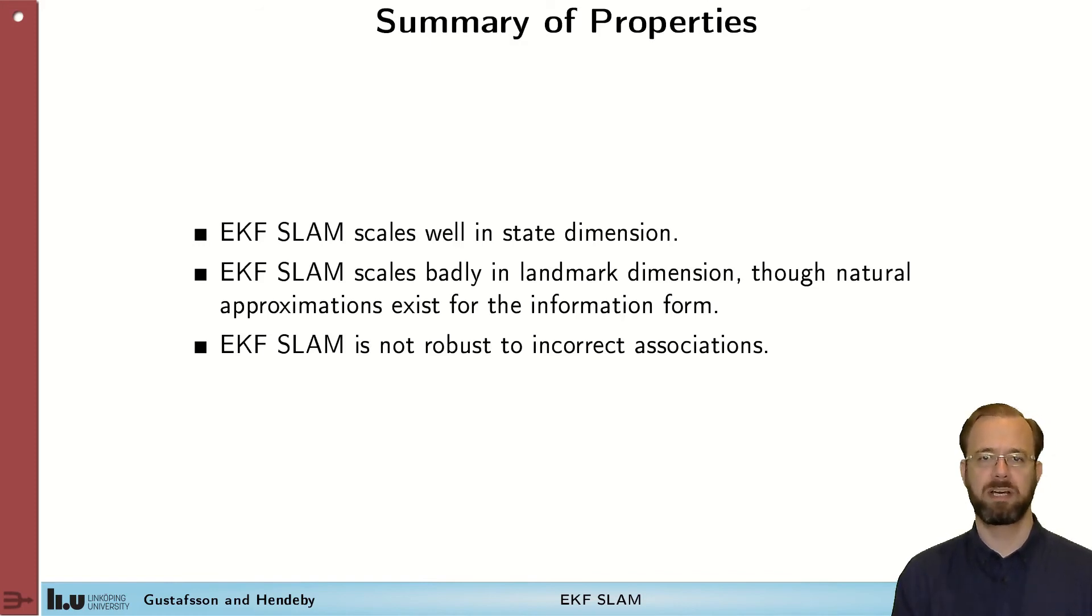The EKF SLAM is sensitive to incorrect associations. A single misassociation of a landmark to the measurement could completely ruin the solution. And that's because we only keep one possible solution at a time. So if we say that you see a landmark that should be on the left but we see it on the right and then compensate for this we will have serious implications to both the pose of the sensor platform and the map. And this must be avoided at all cost. And that means that in an EKF SLAM solution a lot of time is actually spent in doing appropriate associations.